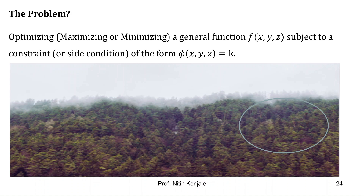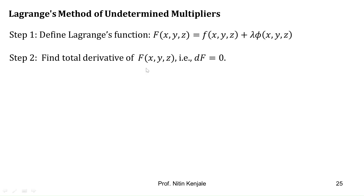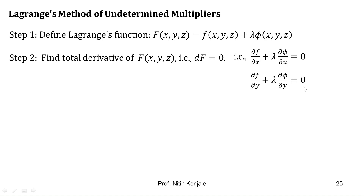Now let us see the steps involved in the method. In step 1, we define the Lagrange's function, denoted by capital F, defined as small f plus lambda into phi. In the next step, we find the total derivative of capital F and equate it with 0. From this, we get Lagrange's equations: ∂f/∂x + λ·∂φ/∂x = 0, ∂f/∂y + λ·∂φ/∂y = 0, and ∂f/∂z + λ·∂φ/∂z = 0. We call these Lagrange's equations.